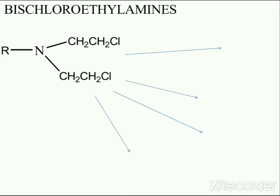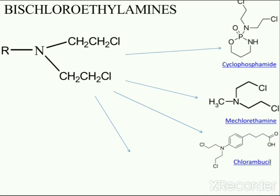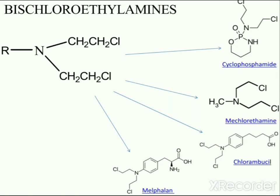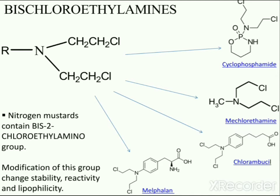Almost all alkylating agents contain this skeleton in common — for example, cyclophosphamide, mechlorethamine, chlorambucil, and melphalan. Modification of this group changes stability, reactivity, and lipophilicity.